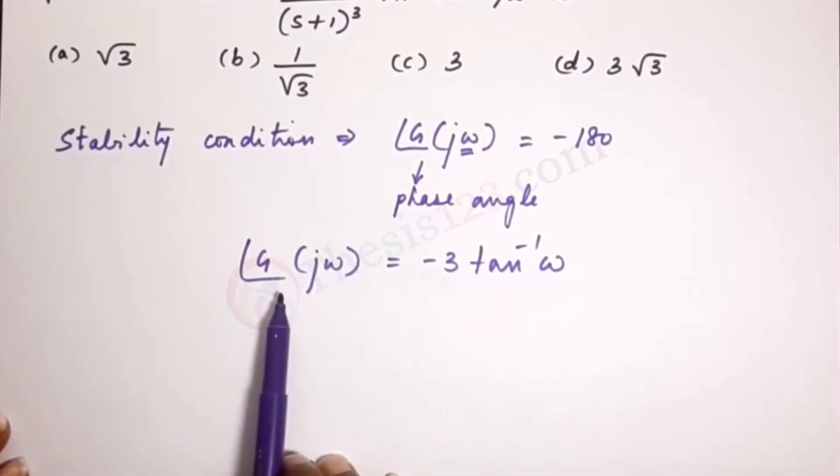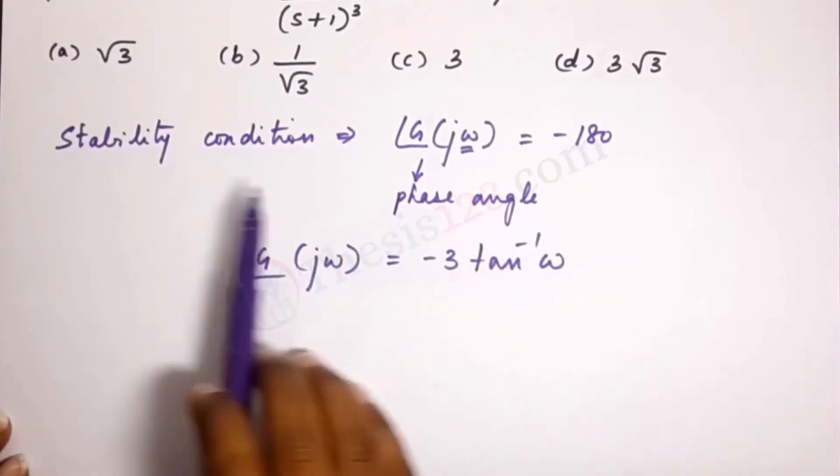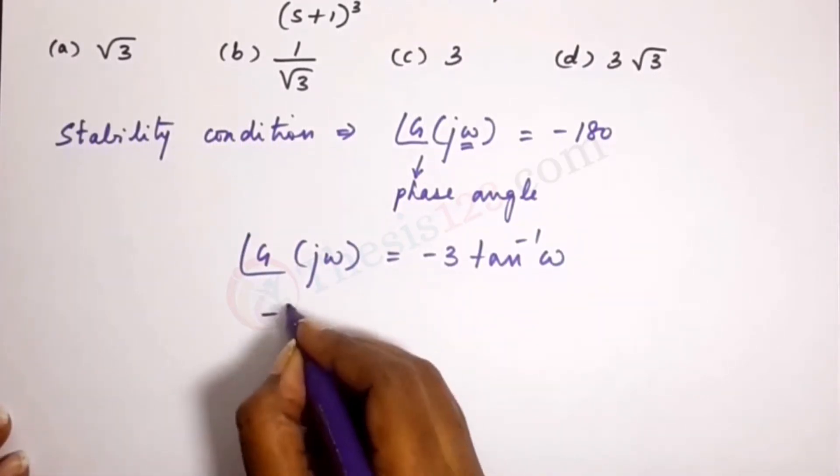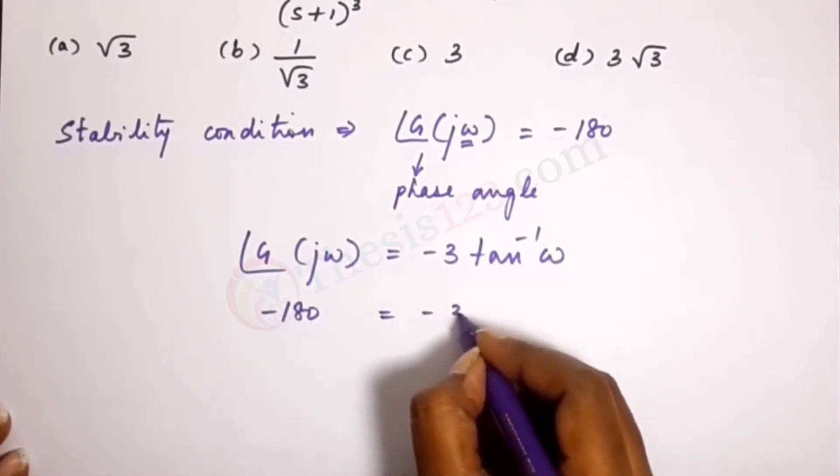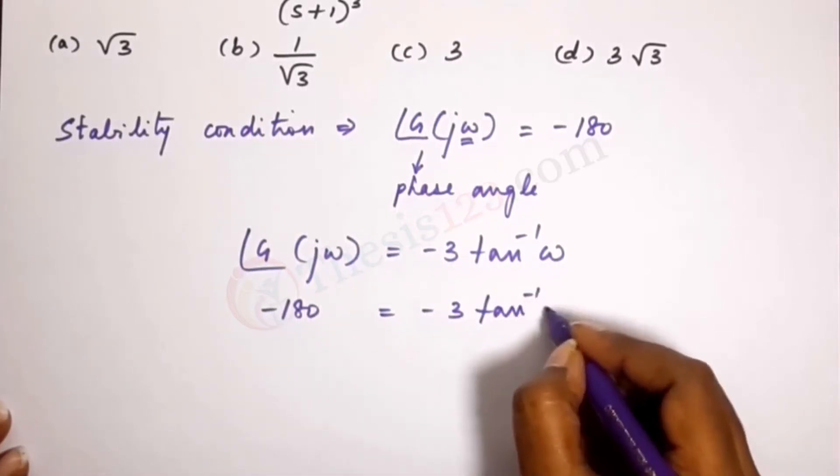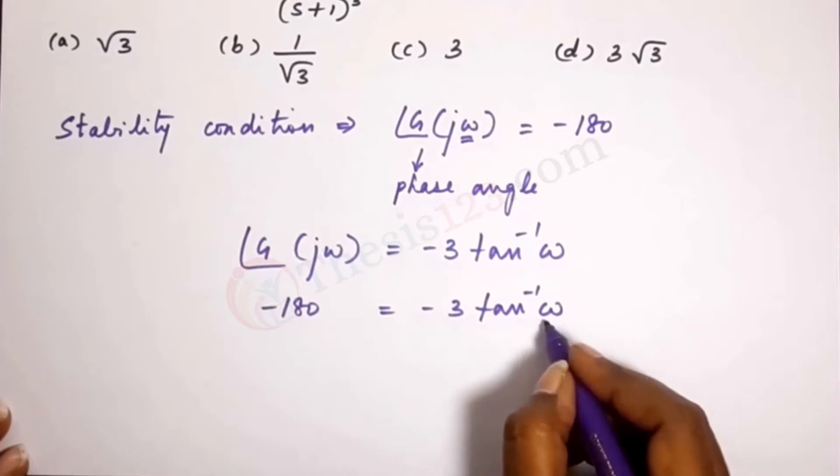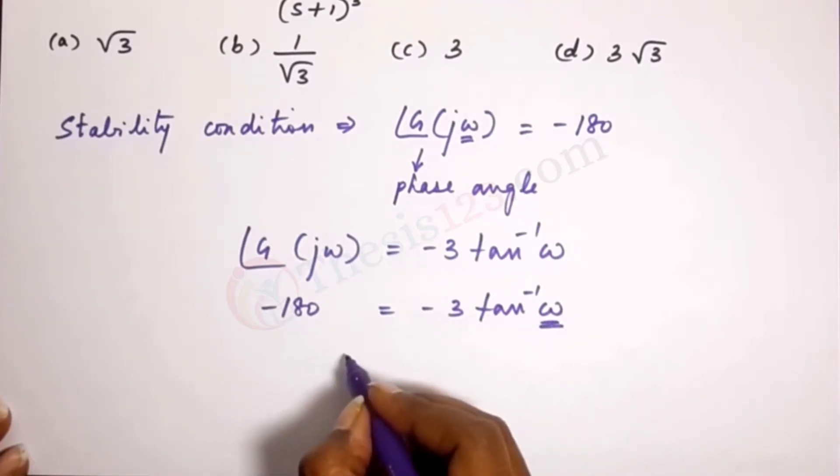Now we have that the phase angle is minus 180 from the stability condition. Let's substitute that over here. Minus 180 is equal to minus 3 tan inverse omega. Solving for omega.